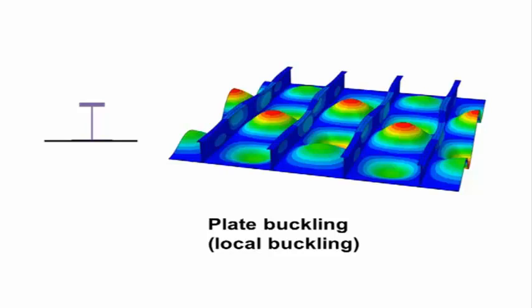Crippling occurs after the plate goes into local instability. Stresses concentrate into the remaining stable cross-section of the stiffener shape until the entire panel crushes.